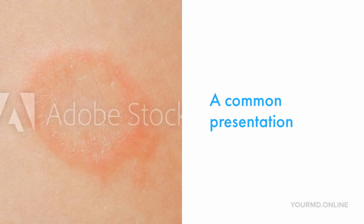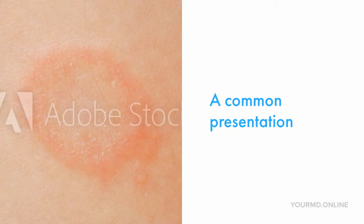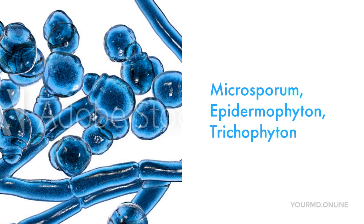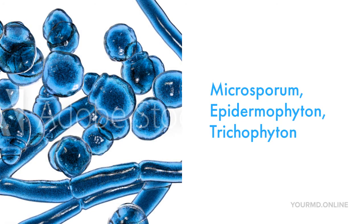What you're looking at is a ringworm lesion on the skin, which is a common presentation of tinea infection on the skin, like the body, which is commonly referred to as tinea corporis, referring to the body. These tinea lesions are commonly associated with fungi like Microsporum, Epidermophyton, and Trichophyton. These are the types of fungi responsible for ringworm lesions on your body.